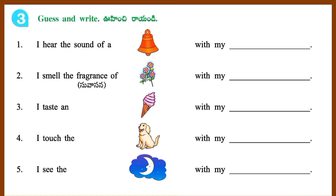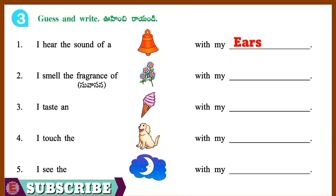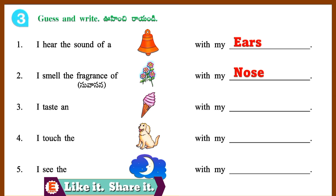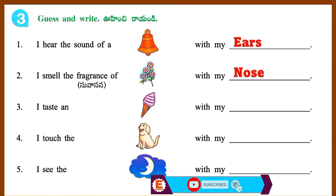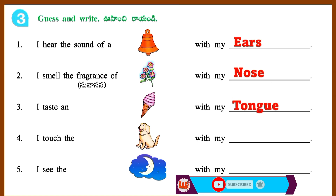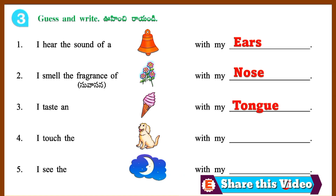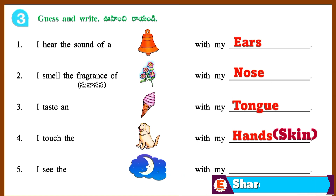Section 3: Guess and Write. 1. I hear the sound of a bell with my Ears. 2. I smell the fragrance of flowers with my Nose. 3. I taste an ice cream with my Tongue. 4. I touch the dog with my Hand.